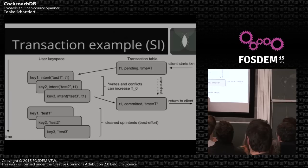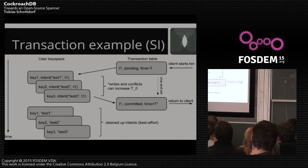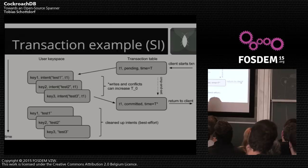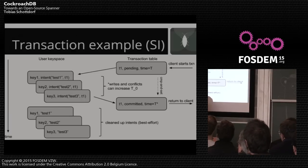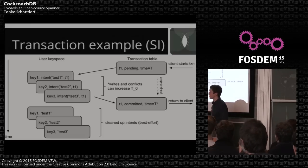When something is written here and shows up as an intent, it's actually already replicated via Raft. When you write an intent, it ends up on at least two replicas — the third will eventually get it. It's already consistent at the moment it appears, because otherwise we wouldn't have any correctness guarantees.